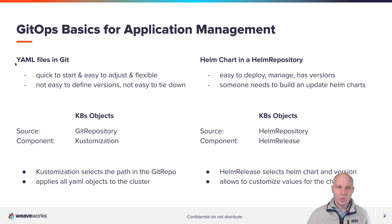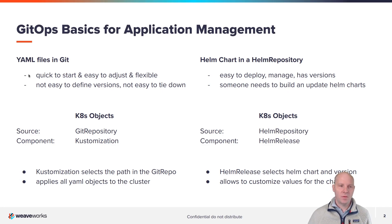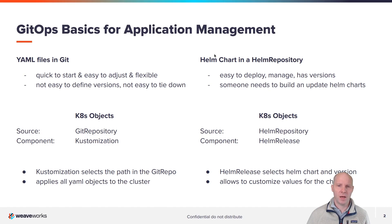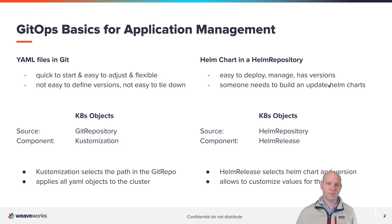There are two different general approaches. One is to put your YAML files in Git — this is a very quick way to start, very easy to adjust and flexible, but it is not easy to define versions and not easy to tie this down. On the other hand, we have Helm charts put into a Helm repository. You can think of this as something like an RPM package or a Debian package — it's pre-built, versioned, easy to deploy and update, but someone has to build and update these packages as well.